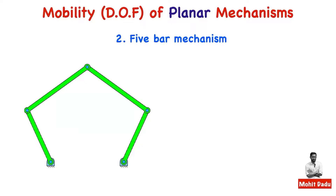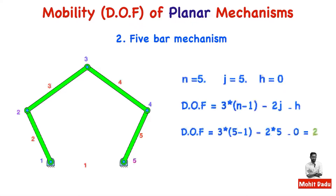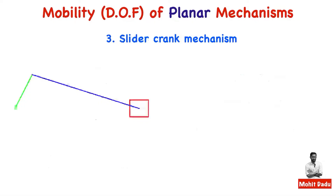For a five-bar mechanism: number of links n = 5; five equivalent binary joints, j = 5; no higher pairs, h = 0. Substituting: DOF = 3(5 − 1) − 2(5) − 0 = 12 − 10 = 2. A degree of freedom of two means two parameters — such as two angular displacements — are needed to completely define the motion of all links in the mechanism.